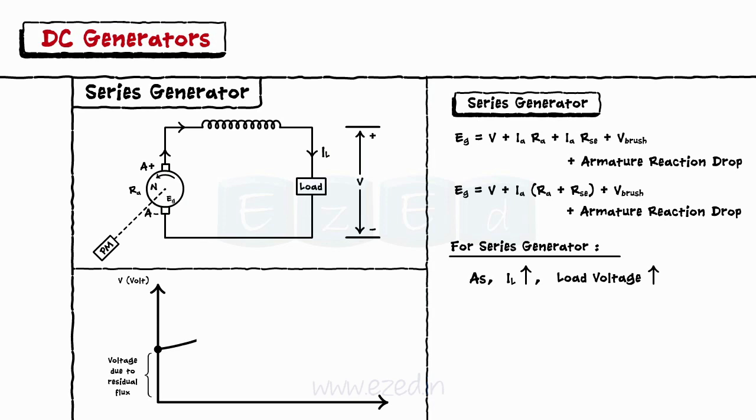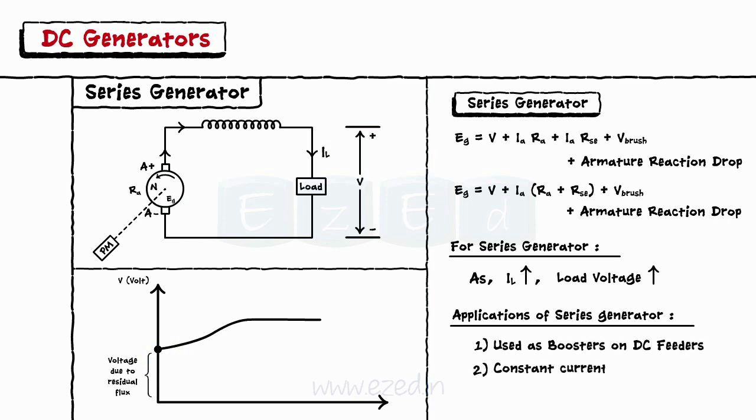Due to the residual flux retained by the field winding, the graph starts from the non-zero voltage value. The applications of the series generator are used as boosters on DC feeders and as constant current generators for welding generators and lamps.